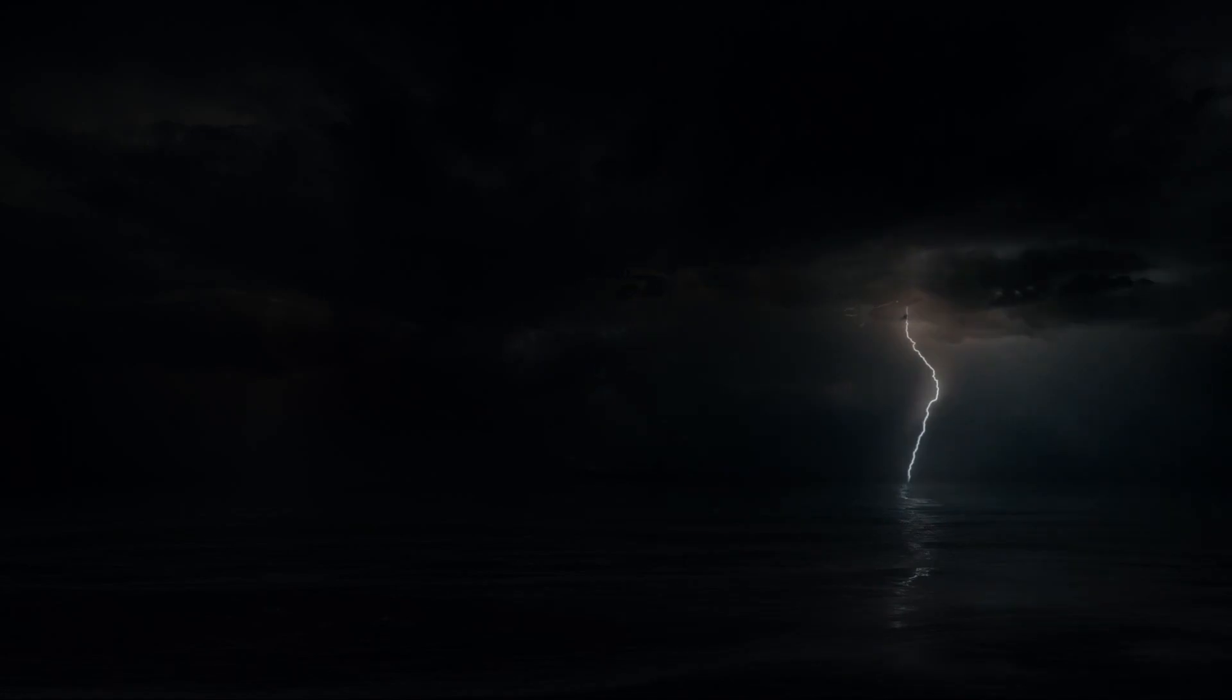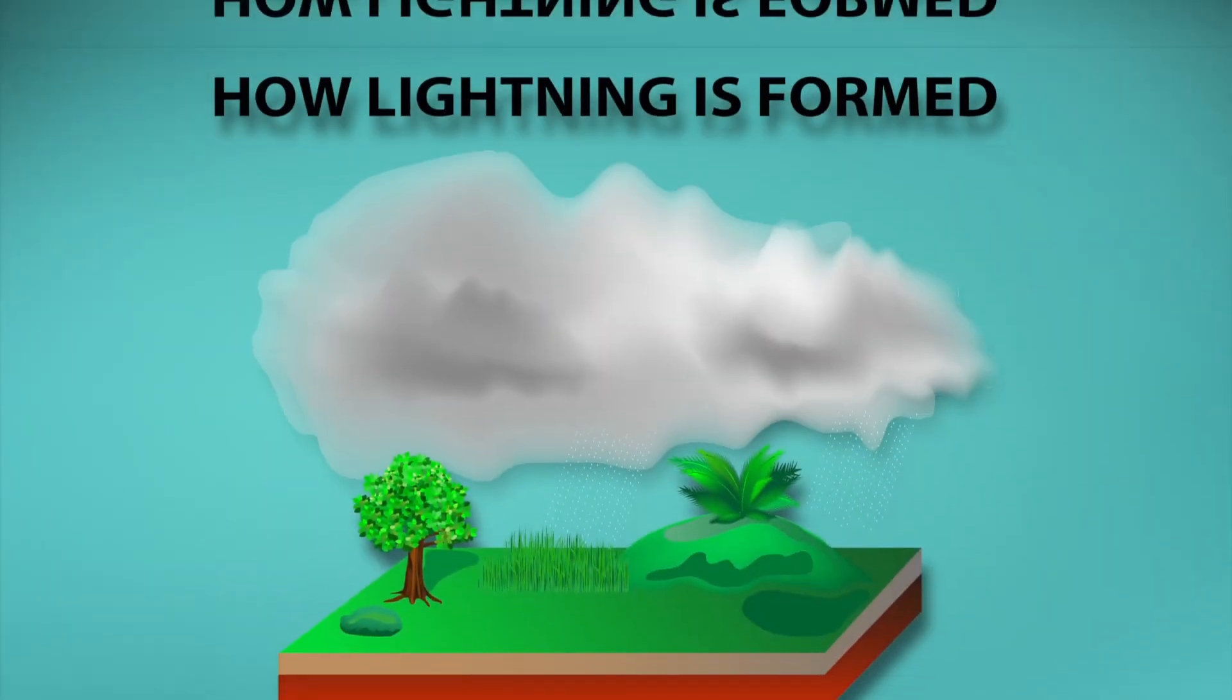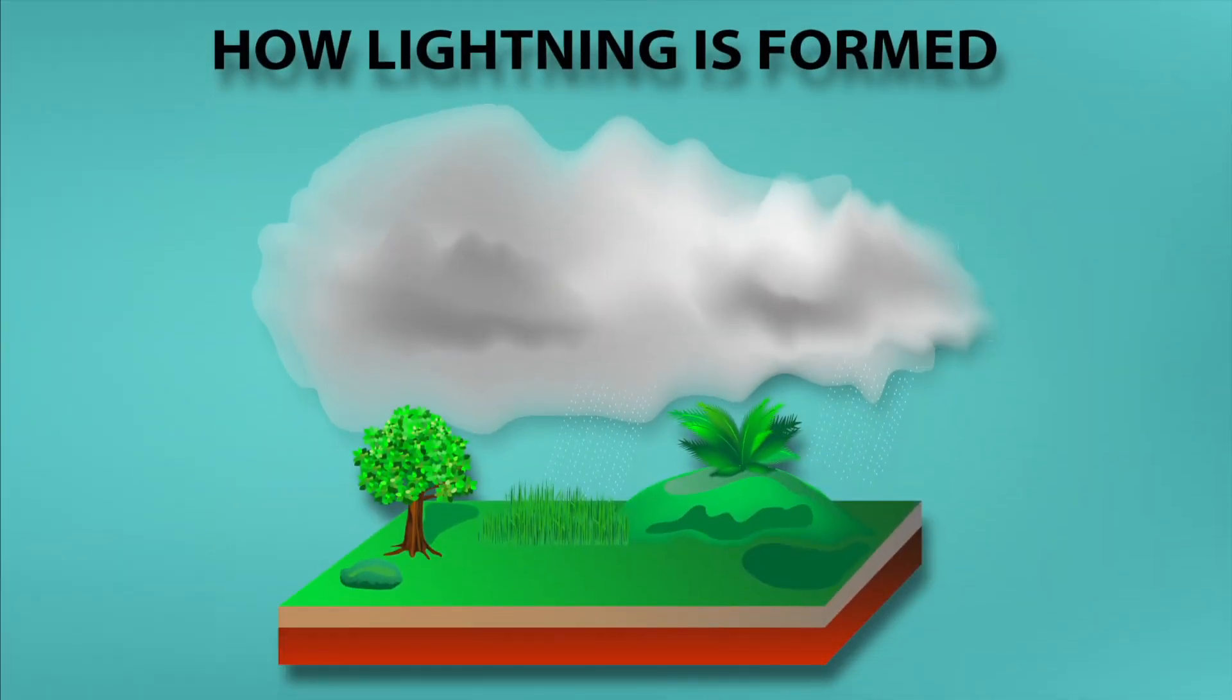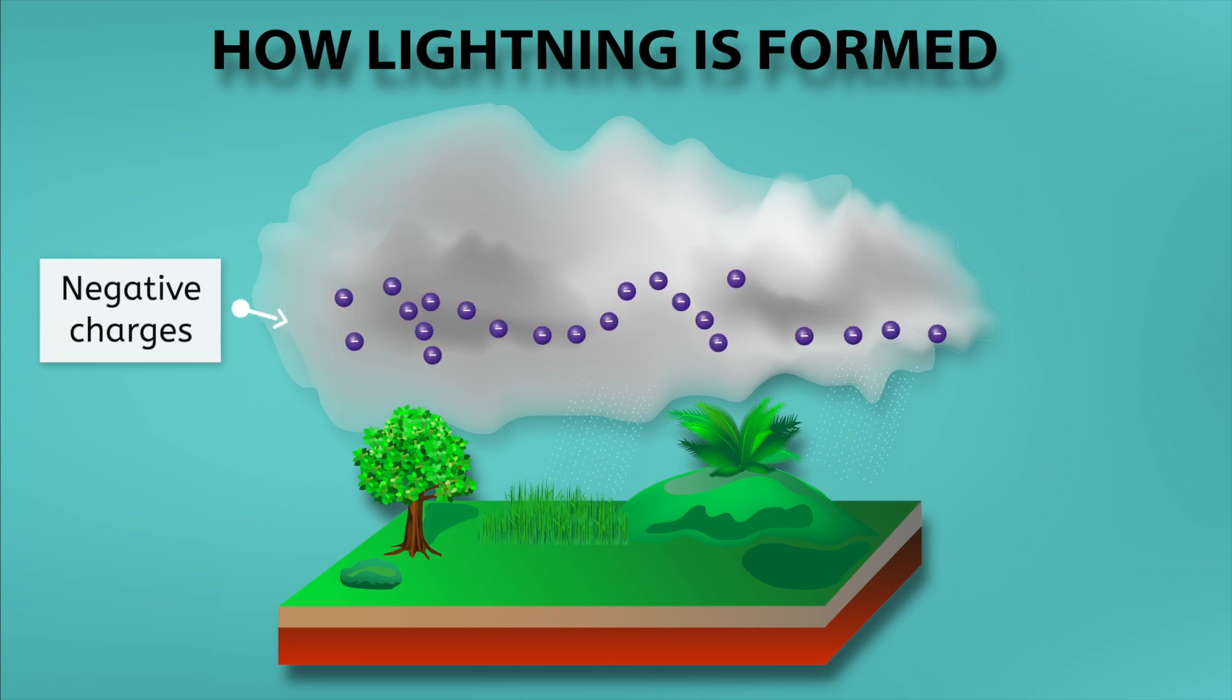Now that we understand electric charge, let's look at how these charges can cause lightning. Similar to how the positive charges gather in the balloon, the negative charges tend to gather at the bottom of a cloud during a storm, while the positive charges gather at the top.